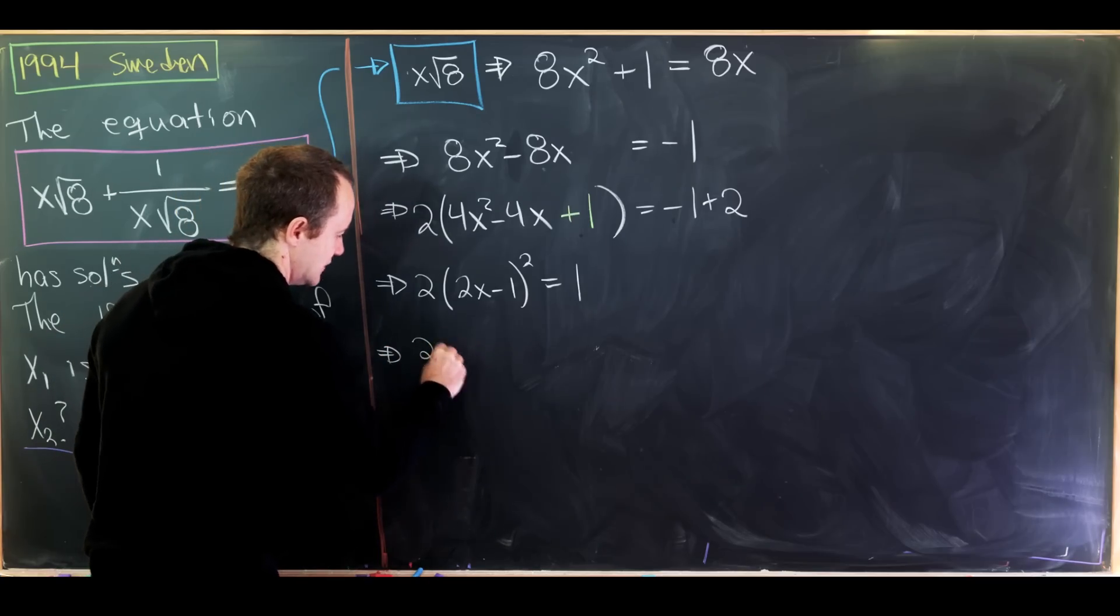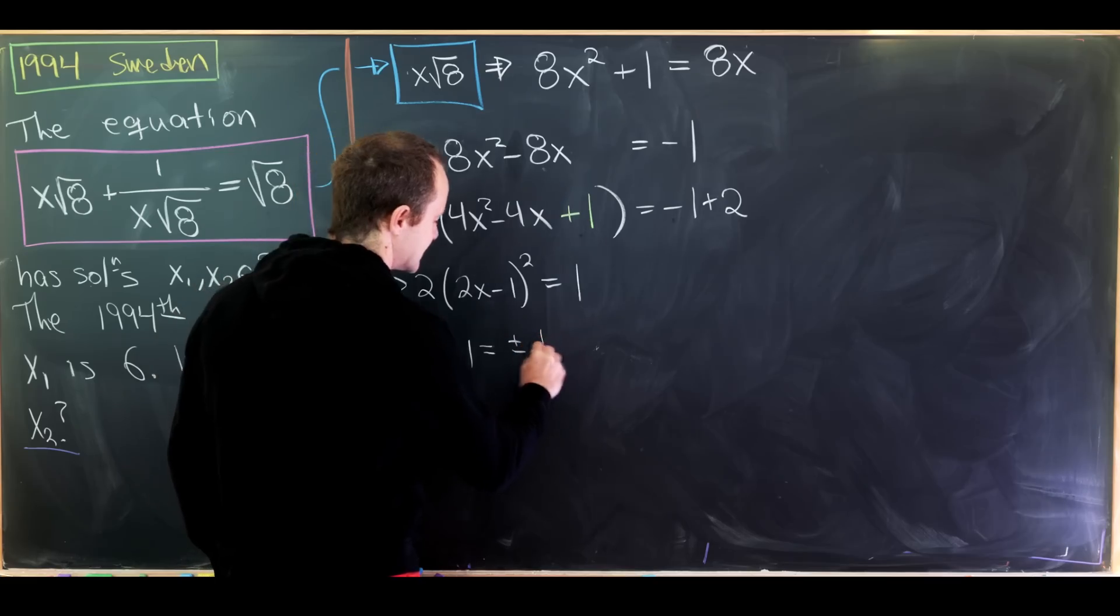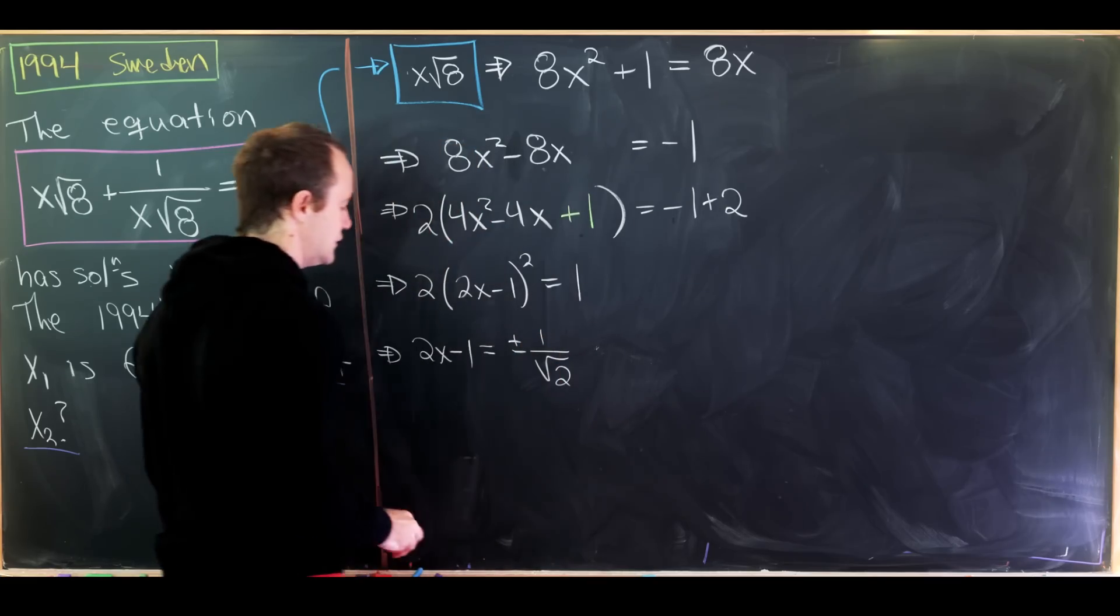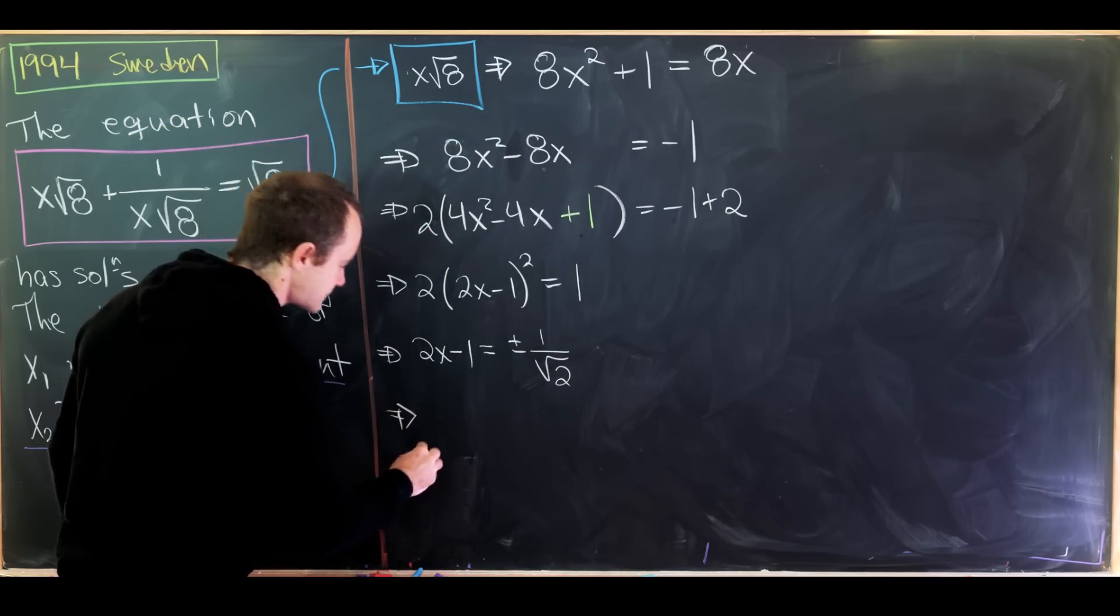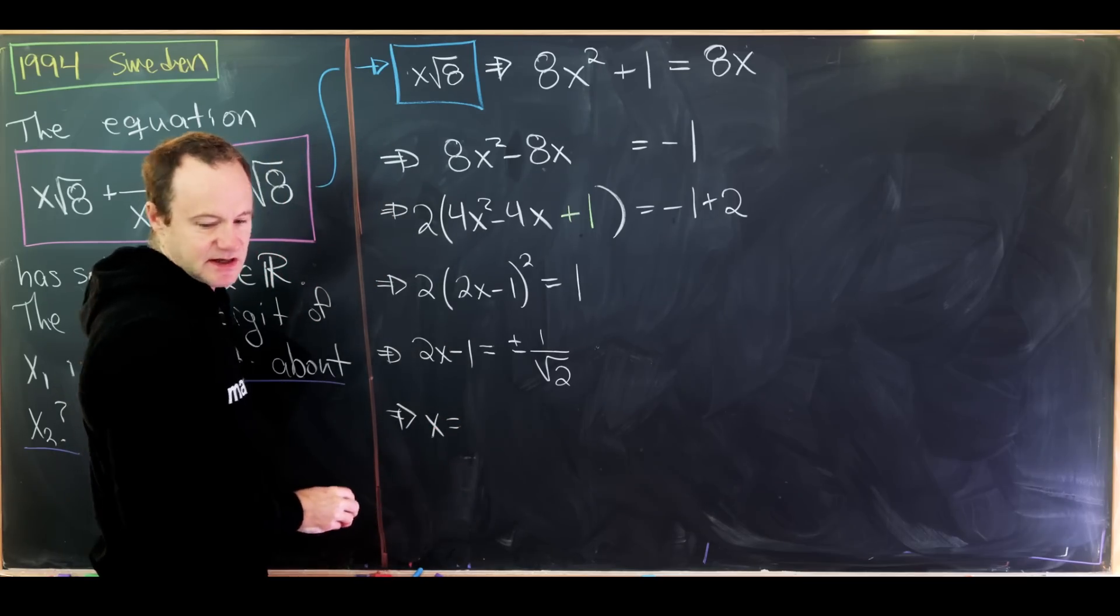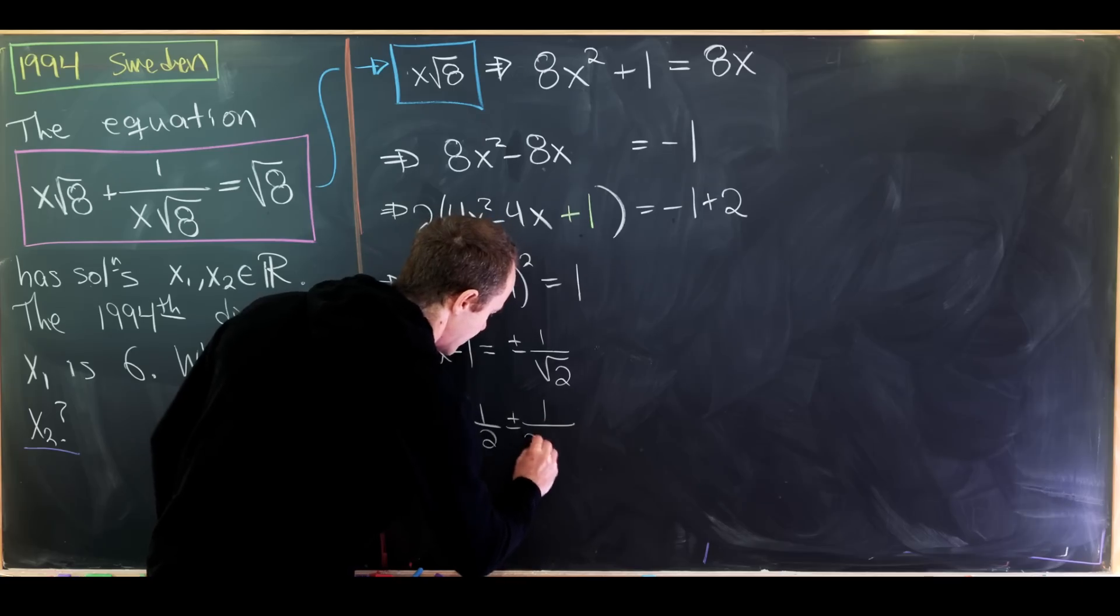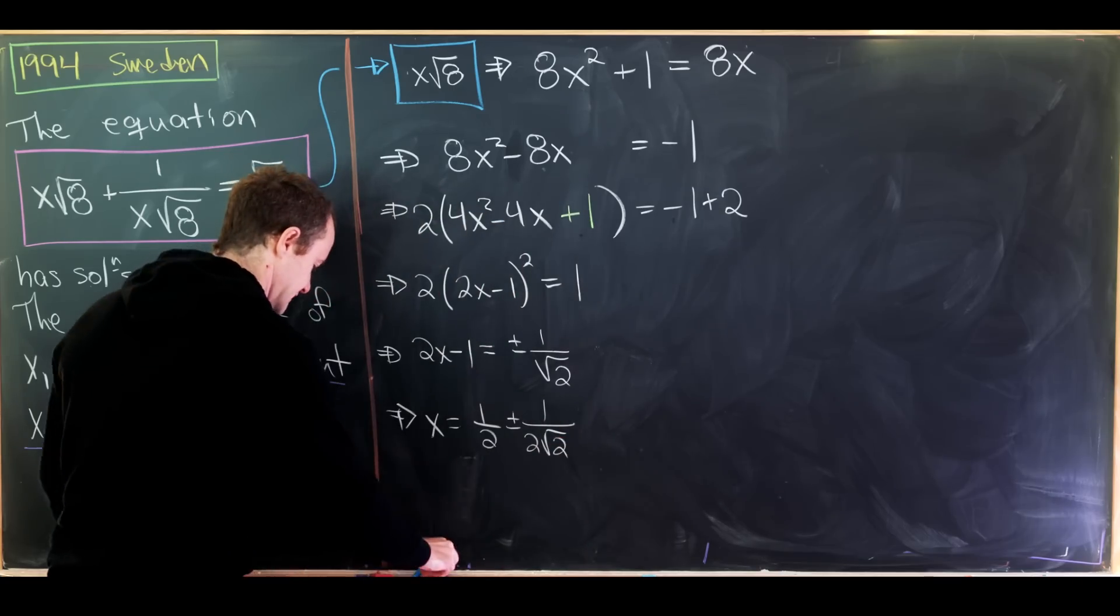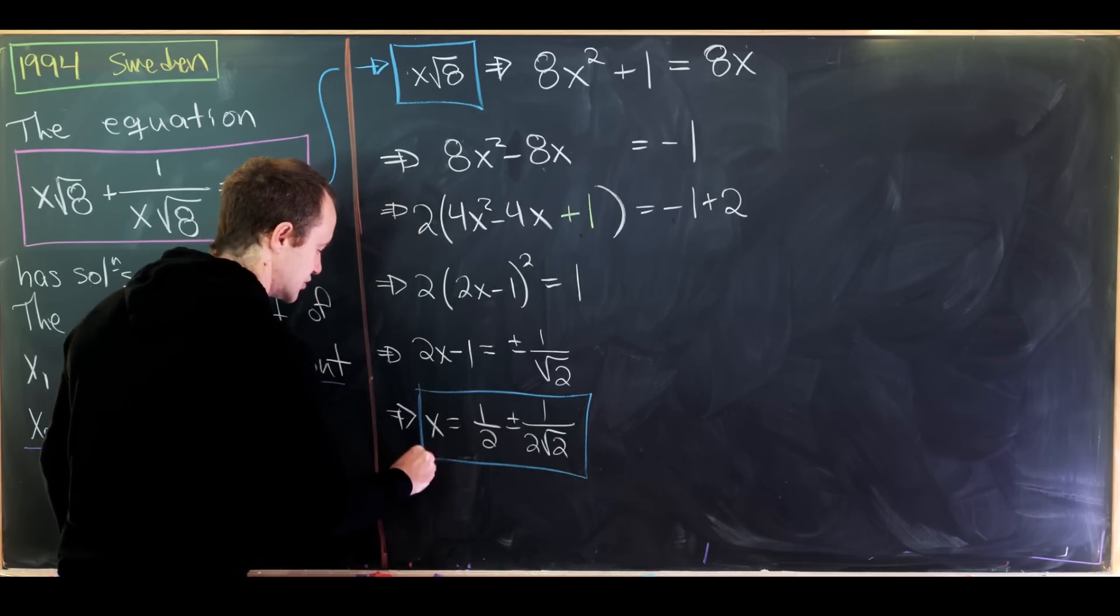We have 2 times 2x minus 1 quantity squared equals the number 1. In other words, we have 2x minus 1 equals plus minus 1 over the square root of 2 after moving some things around. And then finally we have x equals 1 half plus minus 1 over 2 times the square root of 2.